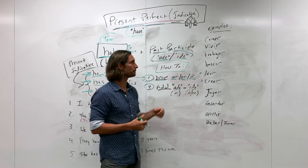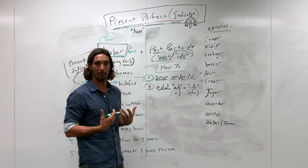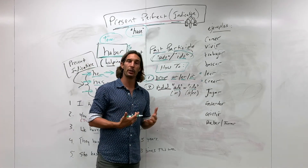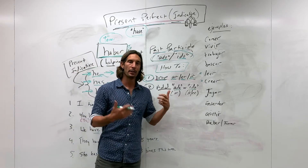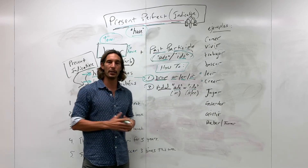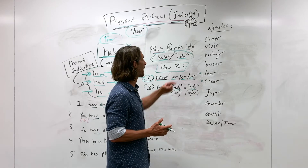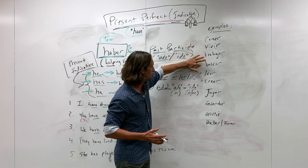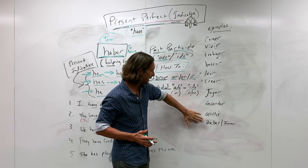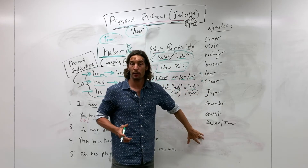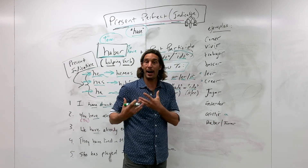Here are examples of infinitives we'll convert to past participles: comer, vivir, trabajar, buscar, leer, creer, jugar, entender, asistir, beber, tomar. Note that 'asistir' paired with 'a' means to attend — to attend an event, a party, or a class. These are unconjugated verbs — infinitives — that we'll now transform into past participles.